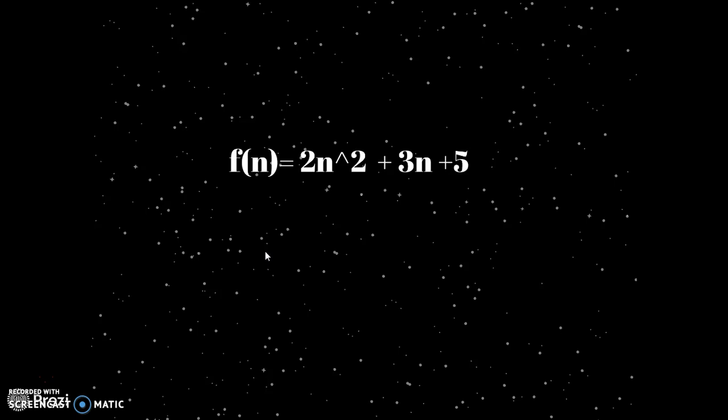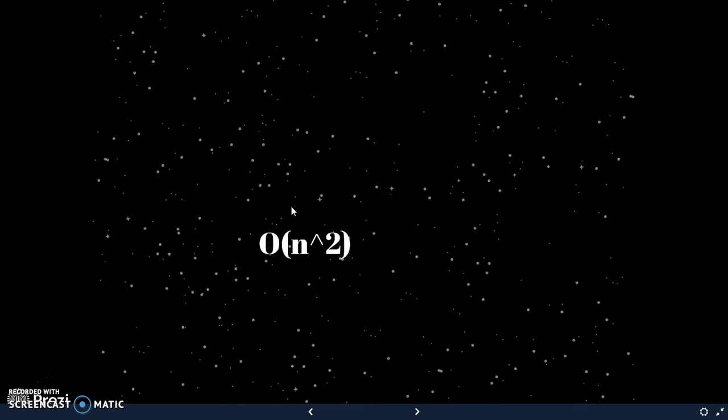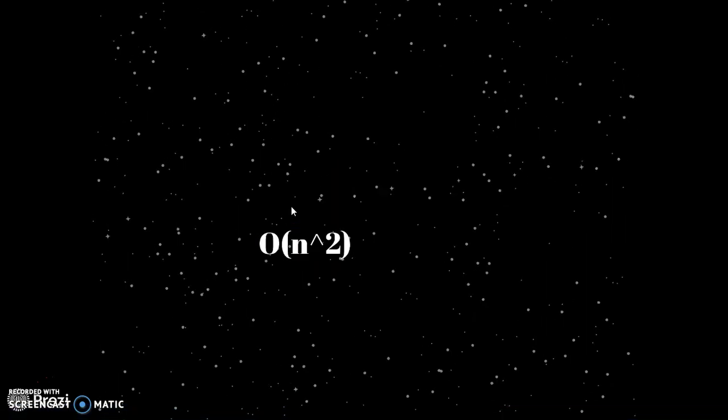You can consider the time function 2n square plus 3n plus 5. Now how can you find the order? Again you will take the term with highest degree which is 2n square, and then you discard the coefficient part, which means this function is of order of n square.